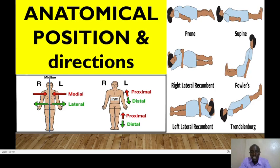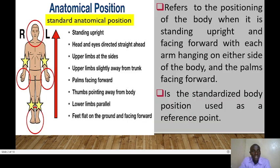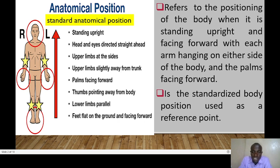Hello and welcome to today's session. Today we are looking at anatomical position and directions — another concept in human anatomy. In anatomical position, this refers to the position of the body when it is standing upright and facing forward, with each arm hanging either side of the body with the palms facing forward. It is a standardized body position used as a reference point worldwide.